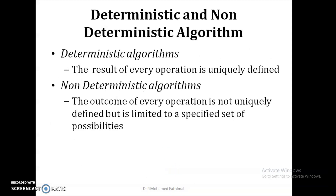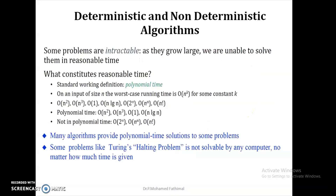We categorize algorithms into two types: deterministic and non-deterministic. In a deterministic algorithm, the result of every operation is uniquely defined. In the case of non-deterministic algorithms, the outcome of every operation is not uniquely defined but is limited to a set of possibilities, because for the same input we are not certain we will get the same output.